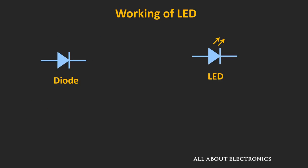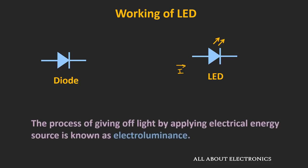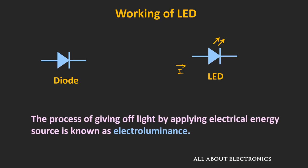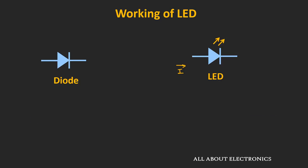As its name suggests, similar to the P-N junction diode, it is also one kind of diode. But whenever the current flows through it in the forward direction, then it emits the light of a particular color. So let's understand the physics behind it.